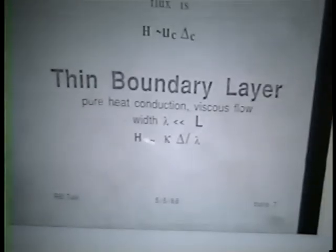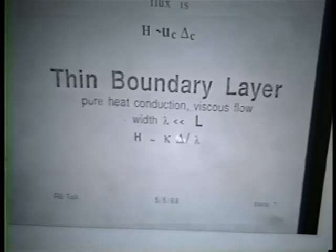I've finished with the central region and now I'm moving into a boundary layer. There's a hot, thin boundary layer at the bottom and a cold, thin boundary layer at the top. In this narrow region, heat conduction is what carries everything. We have a width of the region much less than the size of the system, and the heat flow is by conduction: heat flow equals thermal conductivity times temperature difference across the boundary layer — which is the same order as the temperature difference across the system — divided by lambda, the width of the boundary layer.